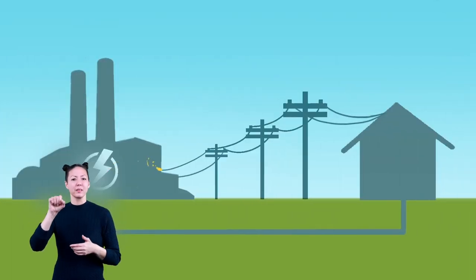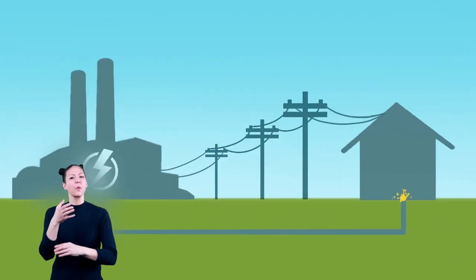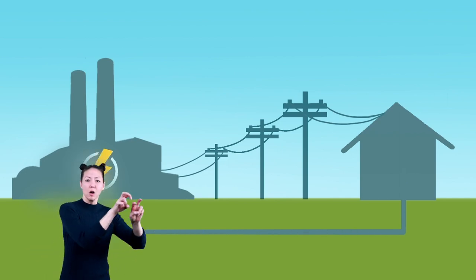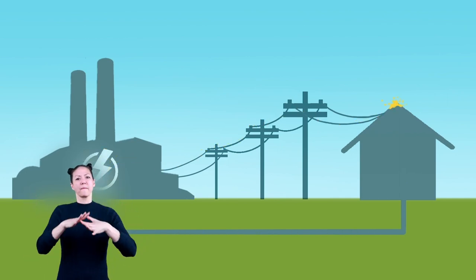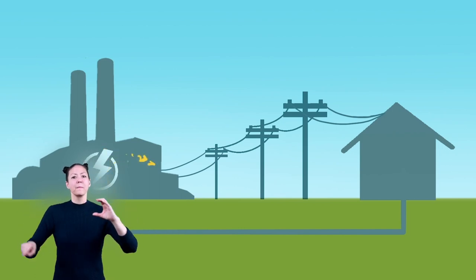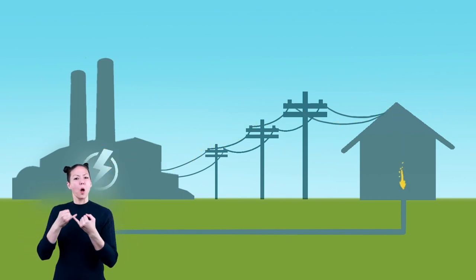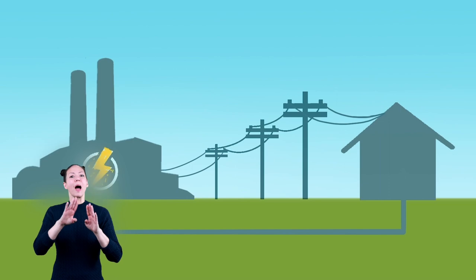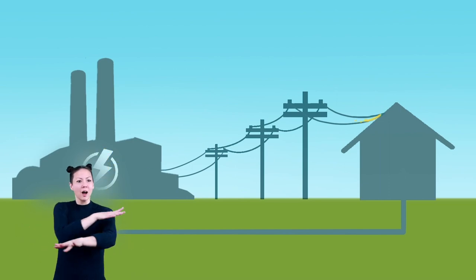The electricity travels through the power lines that you see along roadways and open fields. The electrons travel in a big loop from a power plant to the wires that are hooked up to your house, and then back to the power plant again.